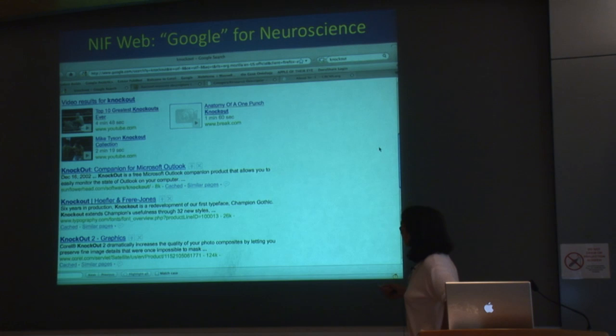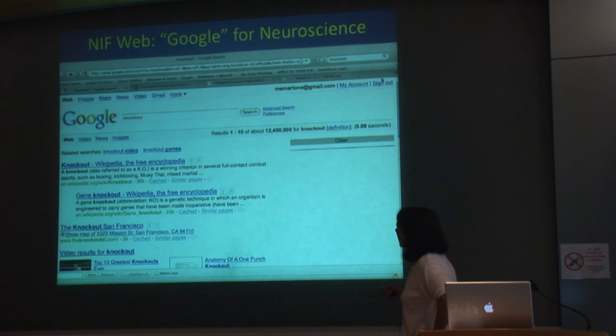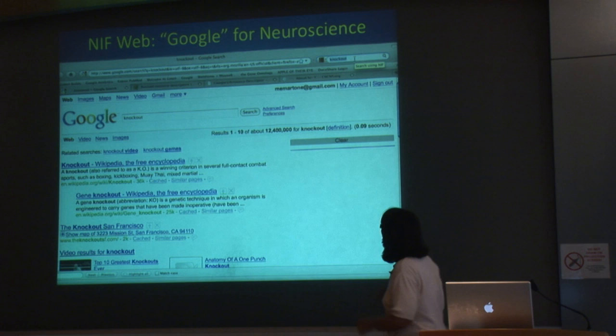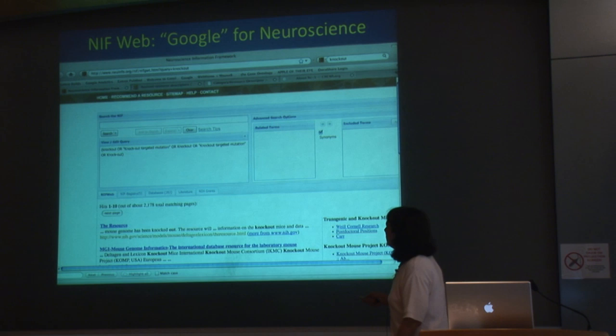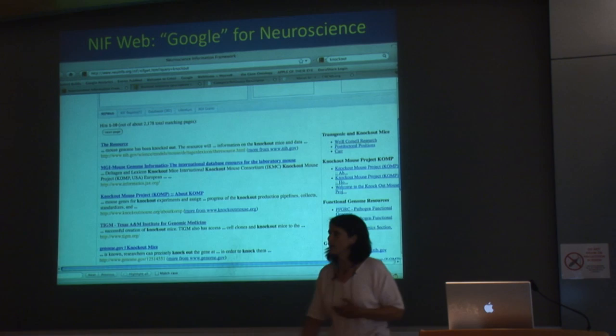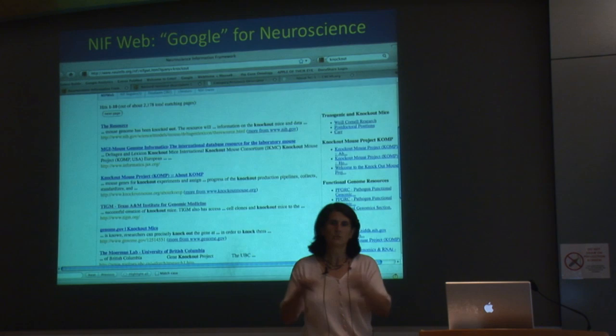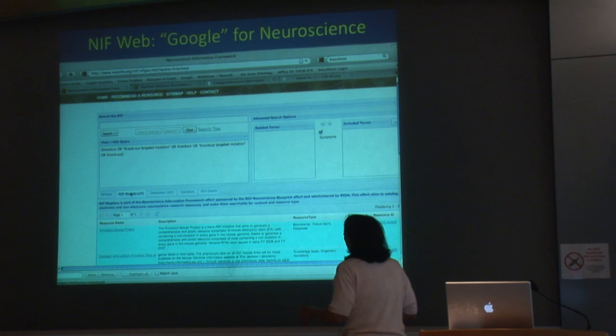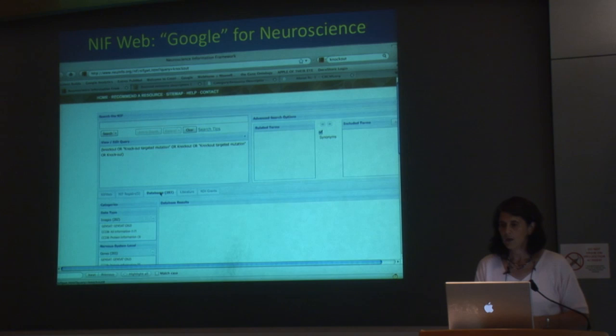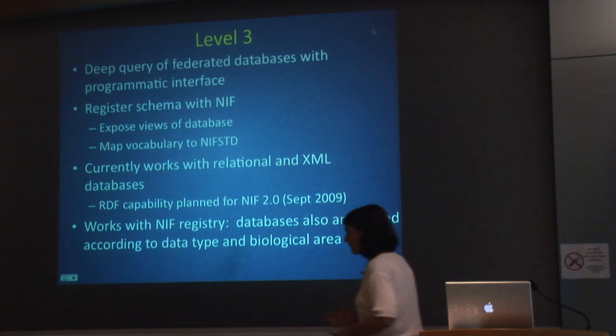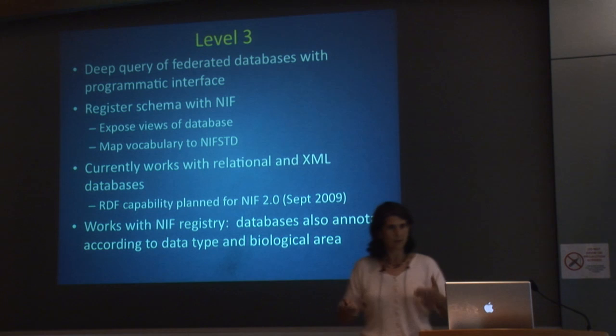How does NIF Web help us? It's targeted. If you search Google for 'knockouts,' you get boxing knockouts and software knockouts. But if you search NIF Web—which has less content but is much more focused—you get transgenic knockout mice, transgenic mice projects, yeast knockouts, and other relevant knockouts. We've shown that for certain types of things, specifically terms that share words with a popular domain, having a focused web search is actually a lot more effective than going to something like Google.